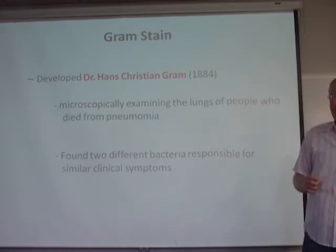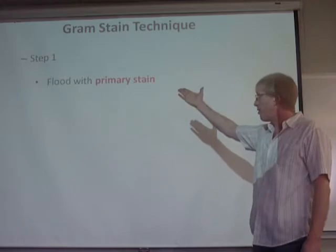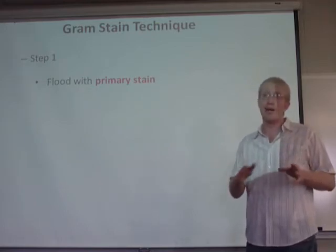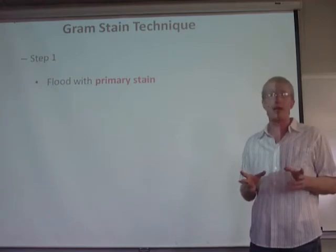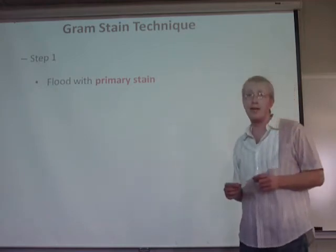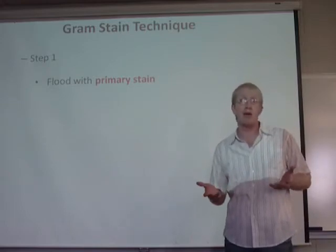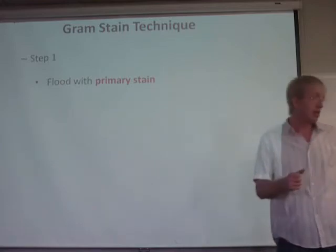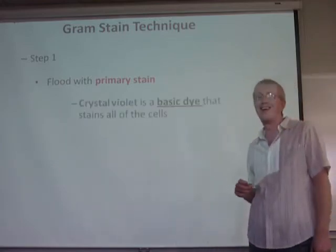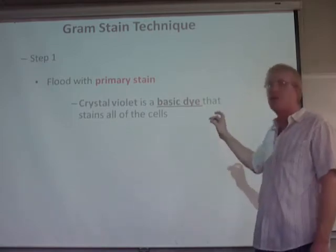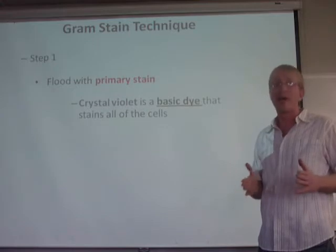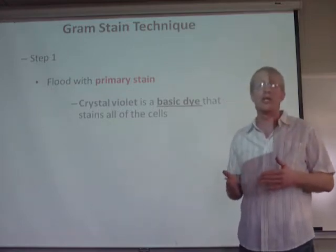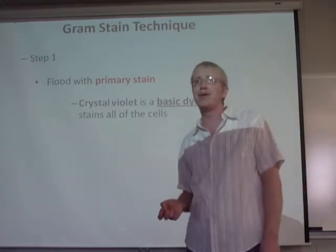Prior to step one, you take the bacterial specimen and heat fix it to a slide. You make a bacterial smear, pass it over a flame to kill the bacteria, and then flood it with the primary stain. It's called the primary stain because it's the first stain applied, and it's intended to stain both gram positive and gram negative bacteria purple. The primary stain is crystal violet, referred to as a basic or cationic dye because it has a positive charge that is attracted to negatively charged structures in the bacterial cell wall.